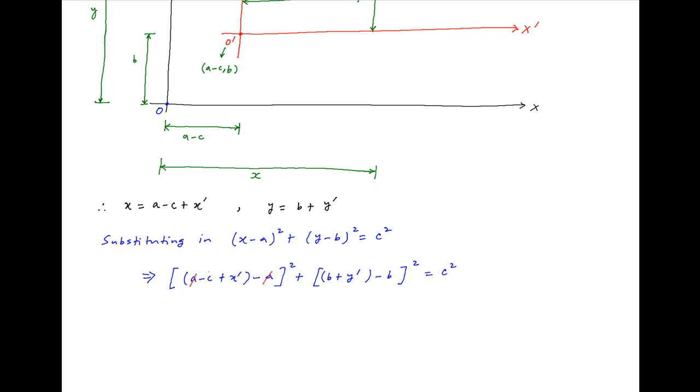In the first term on the left-hand side, A cancels, and in the second term on the left-hand side, B cancels. Therefore, this equation simplifies to (X'-C)² + Y'² = C².